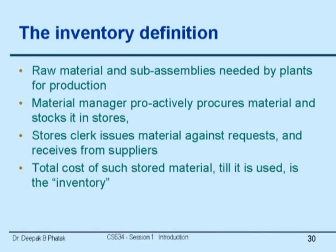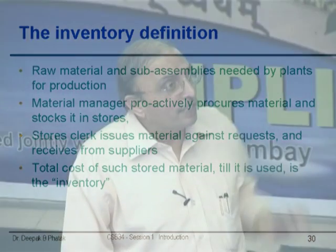It comes out of raw material and sub-assemblies which are needed by some plants for production. A material manager proactively procures material and stocks it. For example, if you are manufacturing fans, you have coils, rotors, or blades which have to be ordered from sub-assembly providers. Ideally if you are going to produce 200 fans today, in the morning somebody should supply all the parts and you should assemble and sell them. But can this happen in reality? No — that fellow may not supply.